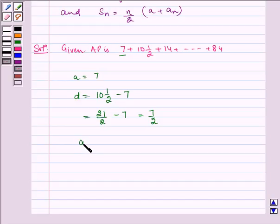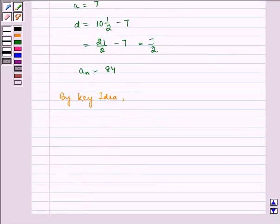And an, that is the nth term, equals 84. Now by key idea we have an equals a plus (n-1)d. AN is given to us as 84, which equals 7 plus (n-1) times 7/2.